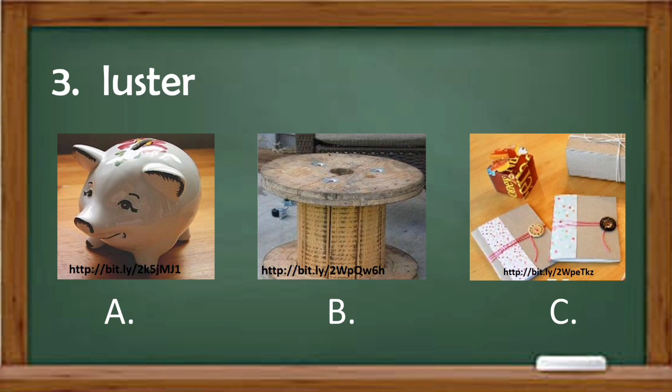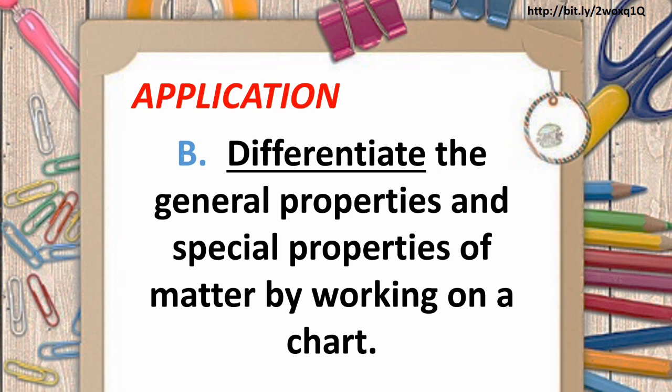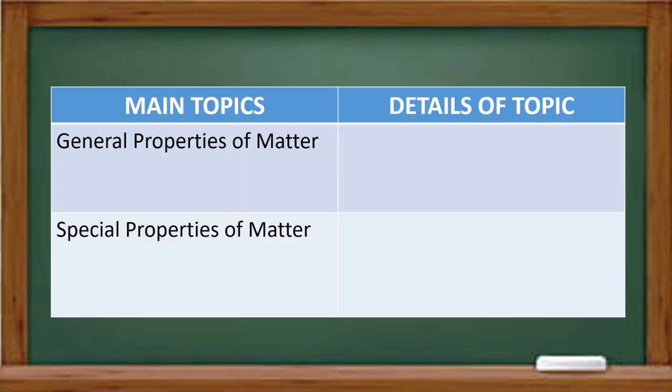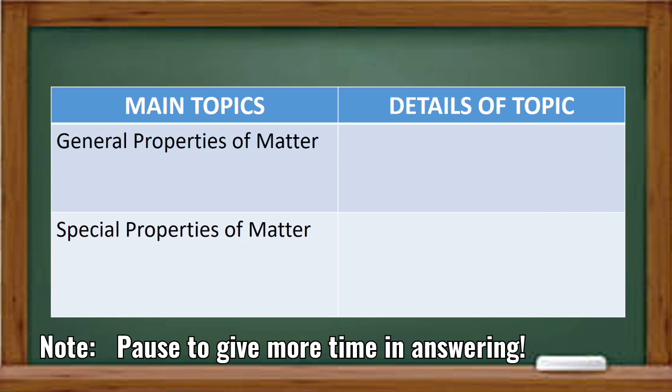For activity letter B, differentiate the general properties and special properties of a material by working on the chart below. Remember, you can always pause and pace yourself while answering these activities.